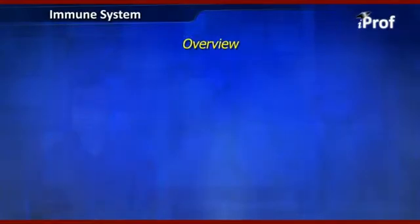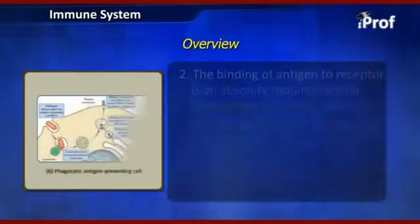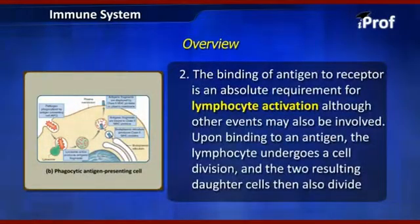We do not mean to imply that every lymphocyte is different from every other one. In most cases, a single type of antigen receptor may be expressed by a small number of lymphocytes, termed a clone. Thus, there are more than 100 million distinct small clones of lymphocytes in the body. The binding of antigen to the receptor in an absolute environment is required for lymphocyte activation.